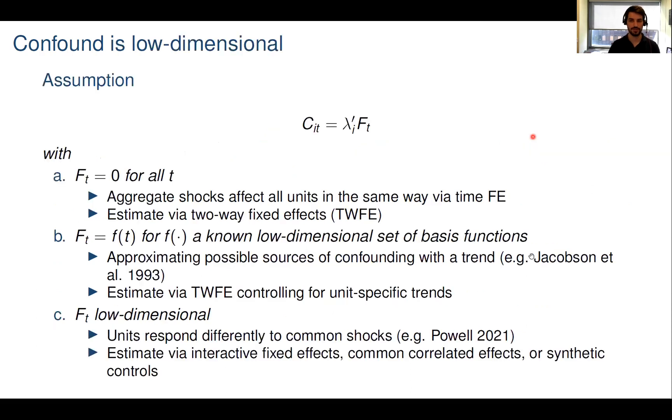Now in the first class of restrictions, I assume that the confound is low-dimensional. The F_t does not depend on i, which means the confound represents aggregate shocks or factors affecting all units. This will usually have to be motivated on economic grounds. I will distinguish three versions of this assumption.